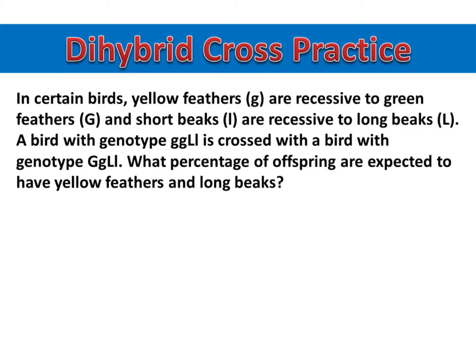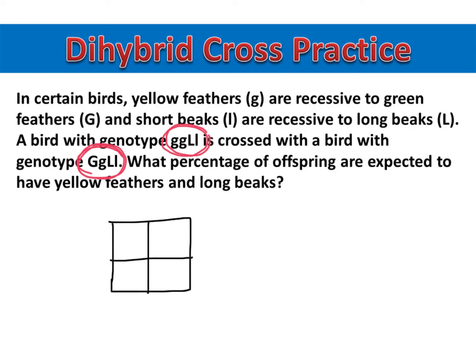I can see they've given me both of them: little g, little g, big L, little l and big G, little g, big L, little l. So now I'm ready to make my Punnett squares, and because I have two traits, I'll have two Punnett squares.